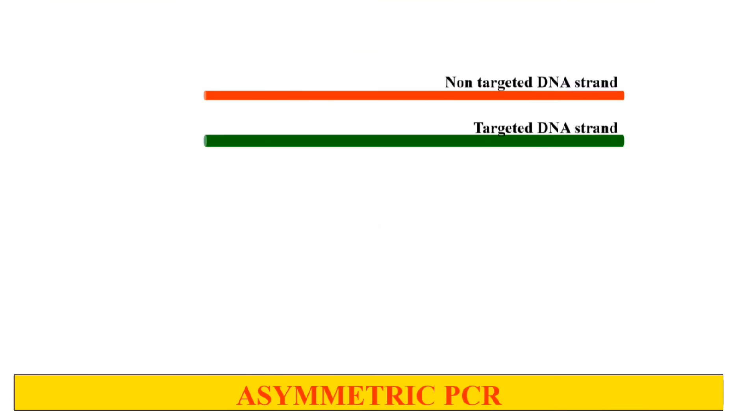Here again is the procedure of asymmetric PCR. This red color shape represents the non-targeted strand, which you do not want to amplify more. This green color shape represents the targeted DNA strand, which you want to amplify more than the non-targeted strand. These are the two strands of the same DNA molecule, but you only want to amplify the green one, not the red one.